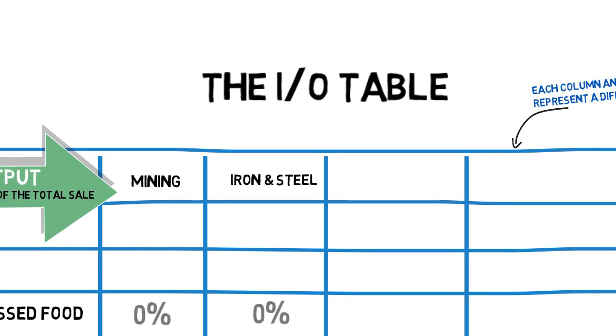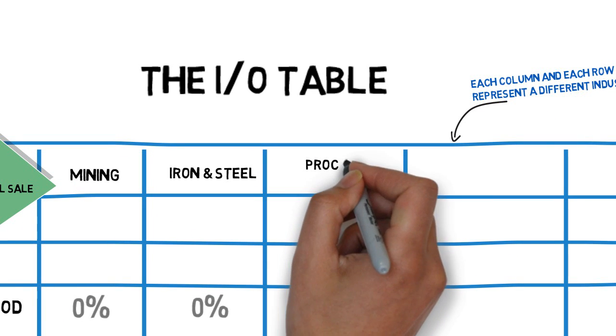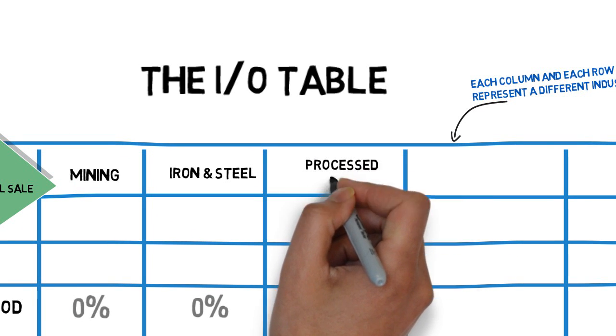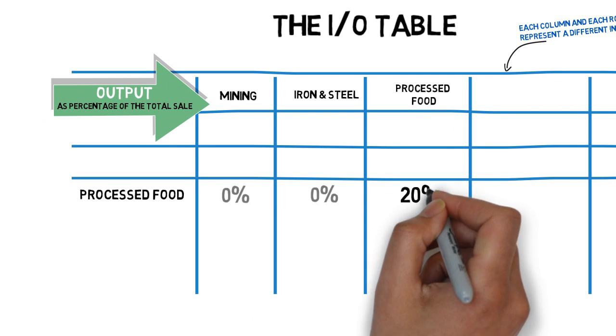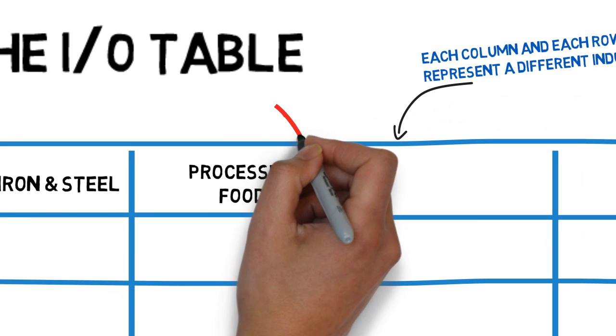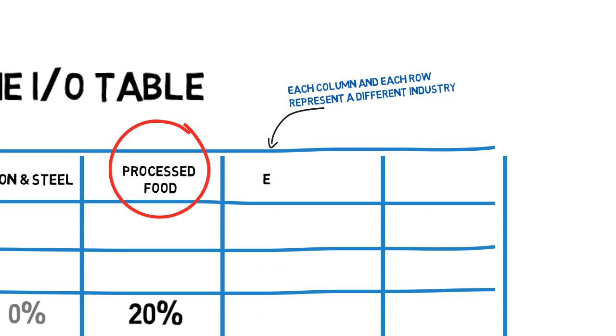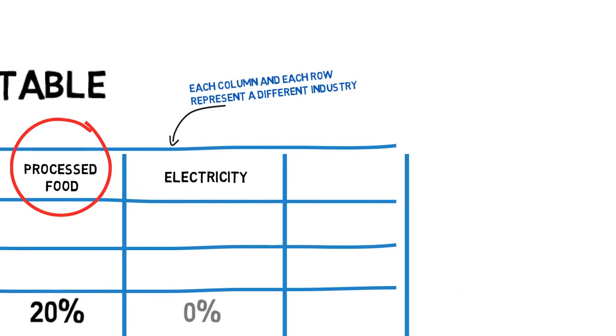But as we move across, we come to the processed food industry itself. It uses processed food as ingredients to make other foods. So there's a big figure there. Let's say 20%. Moving further, we pass industries like electricity and water, zeroes there too, as they do not use food as an input.